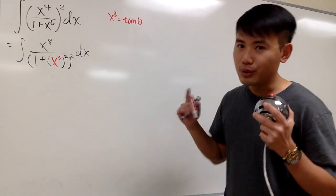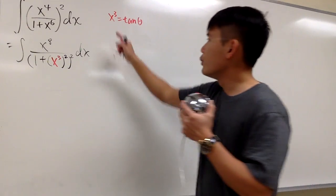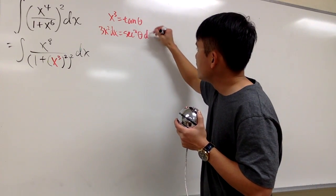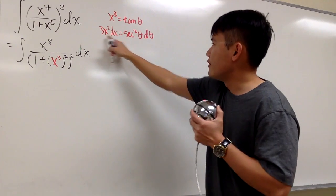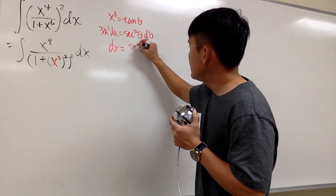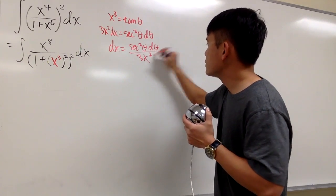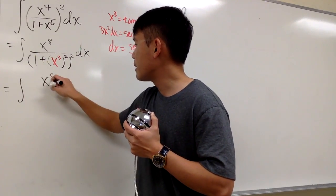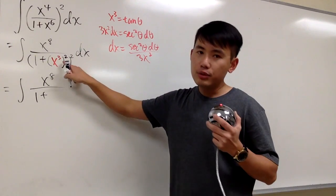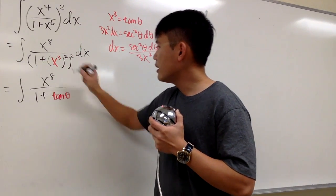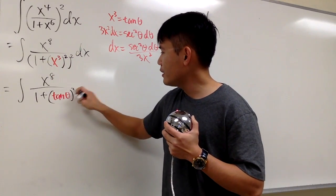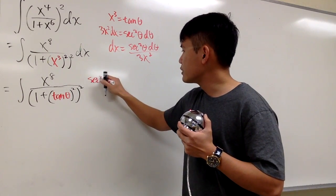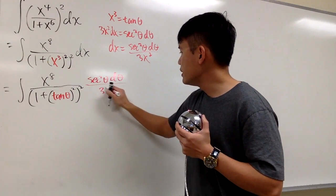We have to take this integral into the theta world. Let's differentiate both sides of the equation: 3x squared dx equals the derivative of tangent theta, which is secant squared theta d theta. Isolating dx by dividing both sides by 3x squared gives us dx equals secant squared theta d theta over 3x squared. Now we'll take this integral into the theta world. On the top we have x to the 8th power; on the bottom, 1 plus x to the 3rd power — which is tangent theta — squared, and the denominator is also squared. For dx, that's secant squared theta d theta over 3x squared.